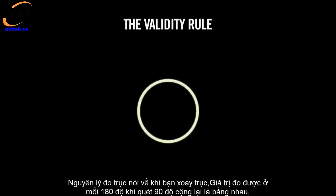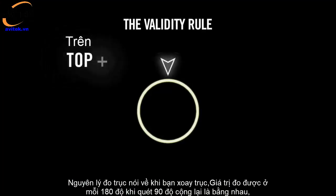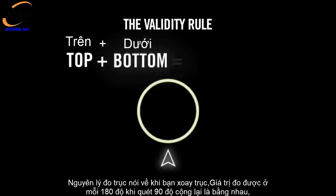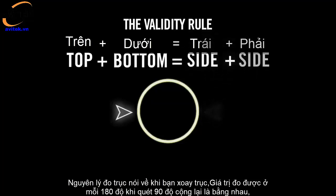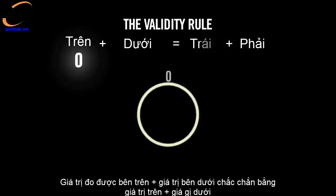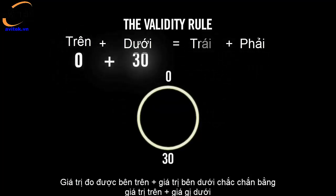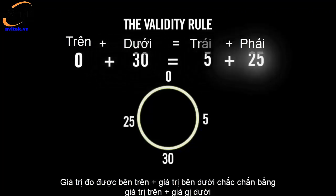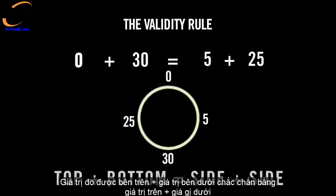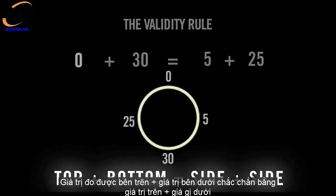The Validity Rule states that when we rotate the shafts, the value we acquire at the top plus the value at the bottom must equal the sum of the value at 3 o'clock and the value at 9 o'clock. So we had zero at 12 o'clock and 30 at 6 o'clock. We had 5 at 3 o'clock and 25 at 9 o'clock. So top plus bottom must equal side plus side.